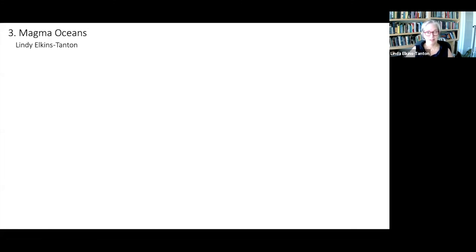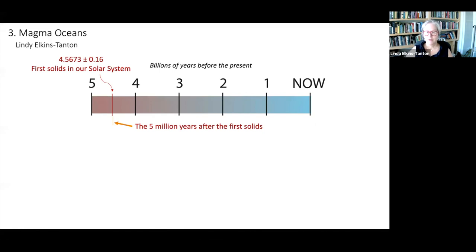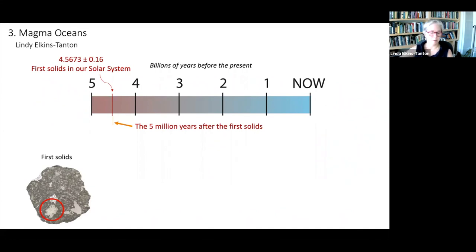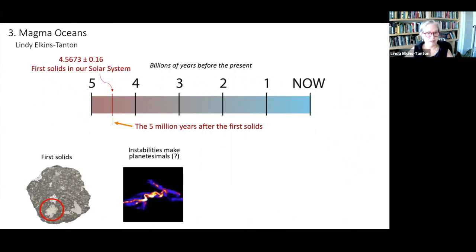So recall where we ended the last discussion. We talked about the first five million years after the first solids in the planetary disk, and we discussed four steps. We discussed the first solids, those calcium-aluminum inclusions, and we discussed how streaming instabilities and Kelvin Helmholtz turbulence may possibly crush dust and little pieces together to make planetesimals.